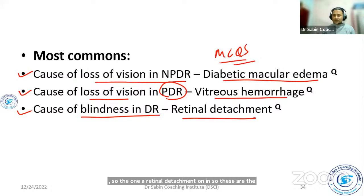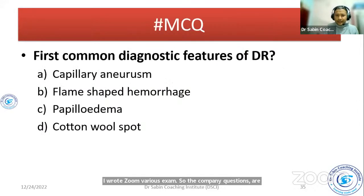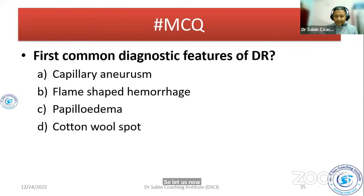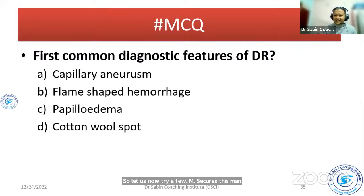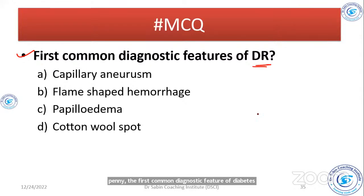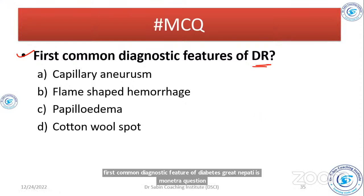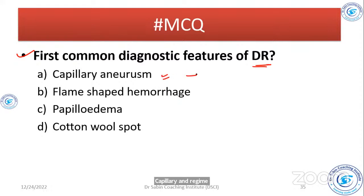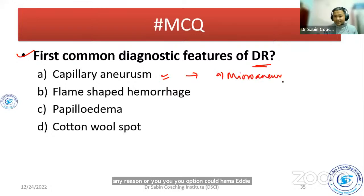Let us now try a few MCQs. First question: what is the first common diagnostic feature of diabetic retinopathy? The answer is microaneurysm, also called capillary aneurysm. Microaneurysm or capillary aneurysm is the first common diagnostic feature of diabetic retinopathy.